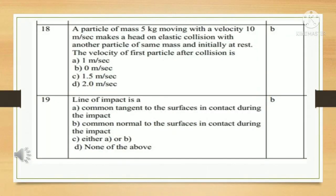Our next question: A particle of mass 5 kg moving with a velocity 10 m per second makes a head-on elastic collision with another particle of same mass and initially at rest. Velocity of first particle after collision is. Answer is B: 0 m per second.